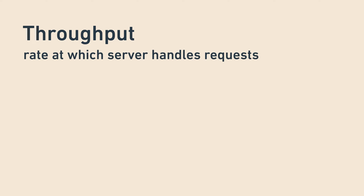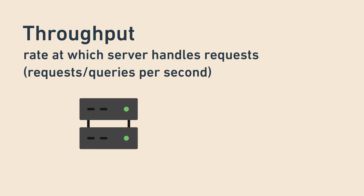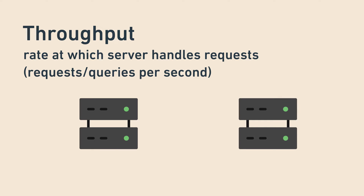On the other hand, throughput is the rate at which the server handles requests. It's a measure of how much work it's able to get through at a particular moment, and is measured in requests per second — also known as queries per second, sometimes abbreviated QPS or RPS. A quiet server might be handling one request a minute or even less, while a busy server could be handling thousands of requests per second.